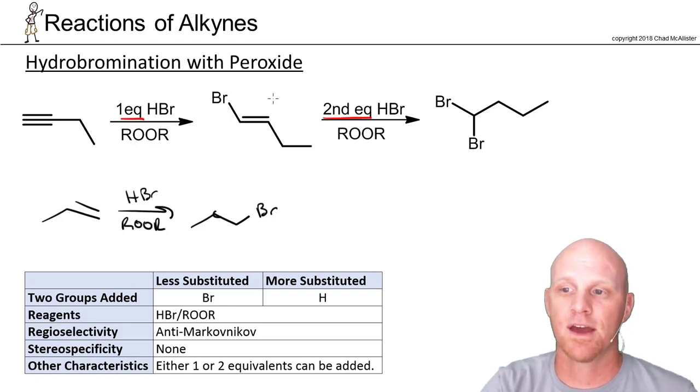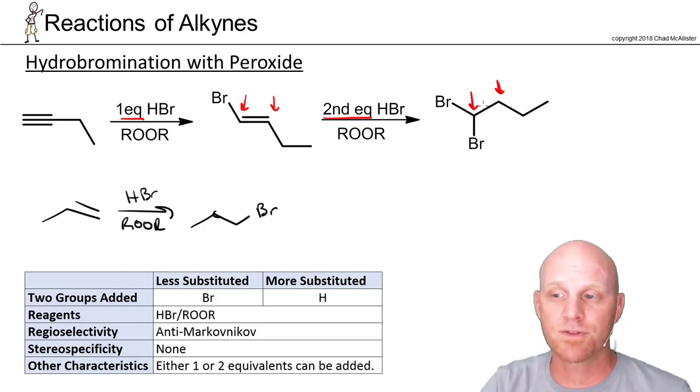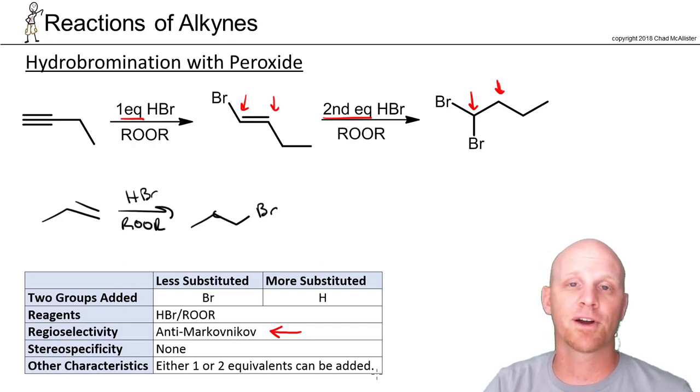If you add one equivalent, then H to the more-substituted side, one bromine to the less-substituted side. If you do it again, another H on the more-substituted side and another bromine on the less-substituted side. Both equivalents go anti-Markovnikov. It's specific for HBr. If you had HCl or HI with peroxide, they still go Markovnikov.